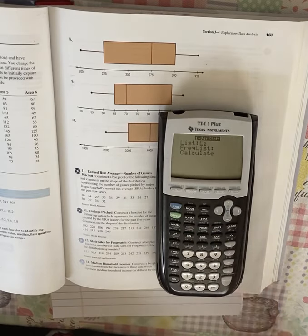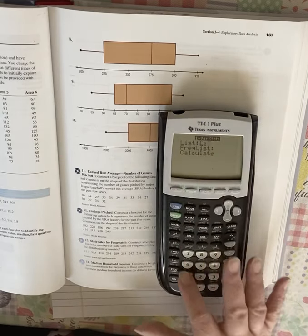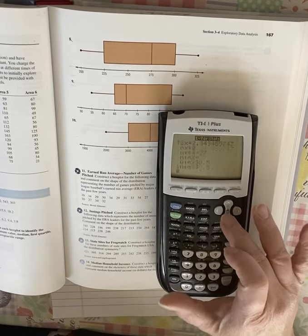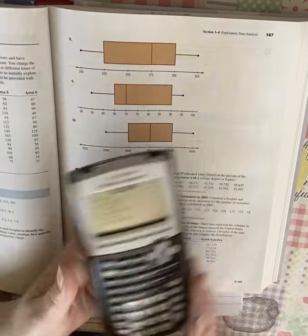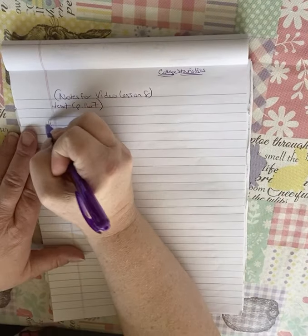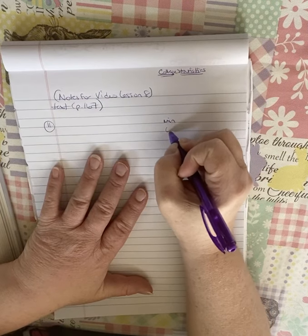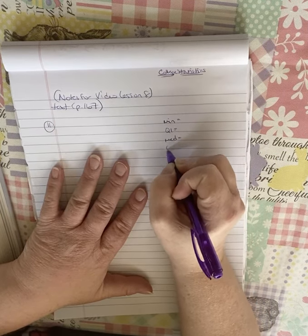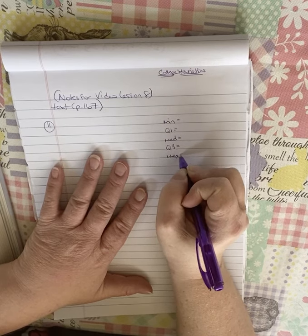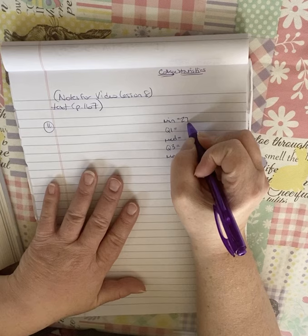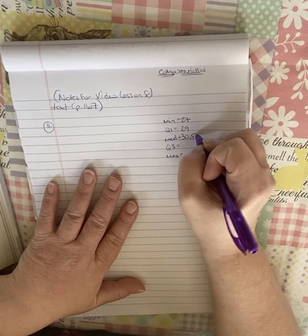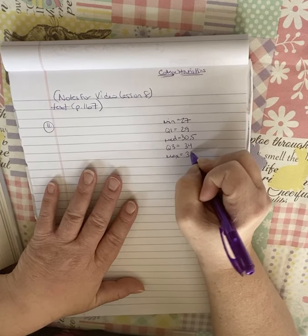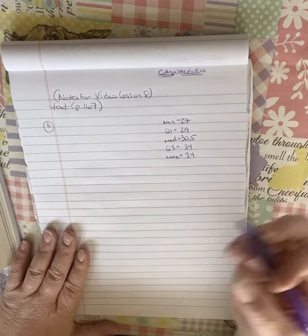Okay. So we go stat, calc, one for fun. I'm using L1. Mine has L2 in it. So I'm going to move second one, enter. And what do I have to copy down? The five number summary. The min, Q1, the mid, Q3, and the max. So here we go. So this is number 11. And over here, I'm going to write the min, Q1, the mid, Q3, and the max. So we have 27, and 29, and 30.5, and 34, and oh yeah, this was a weird one. The Q3 and the max are the same.